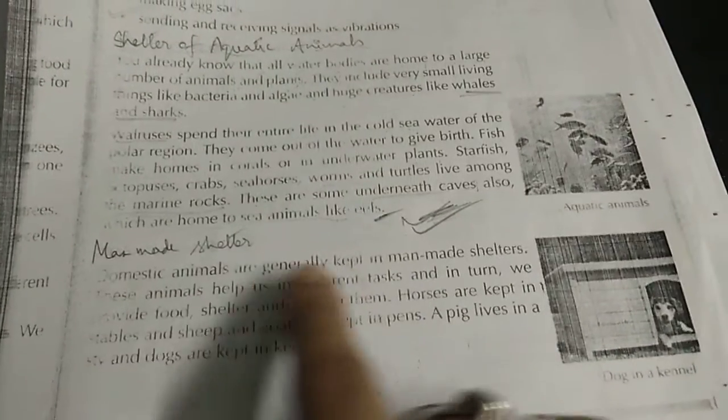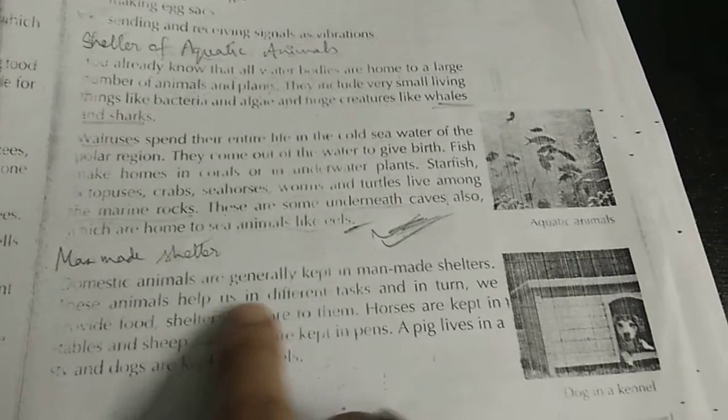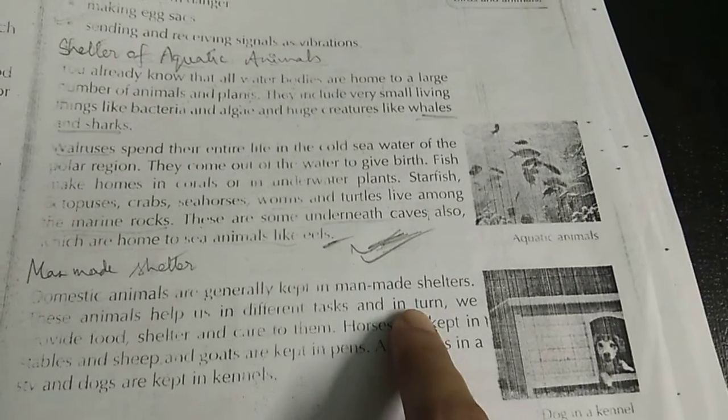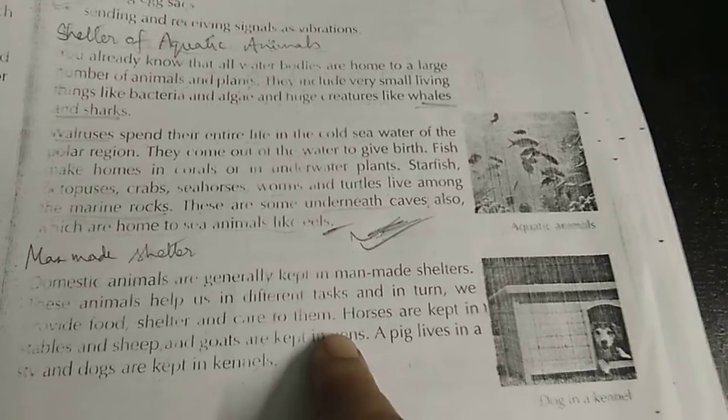As for EVS, man-made shelter. Domestic animals are generally kept in man-made shelter. These animals help us in different tasks and in turn, we provide food, shelter and care to them.